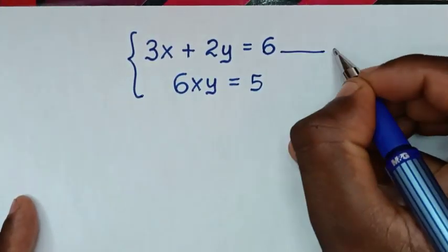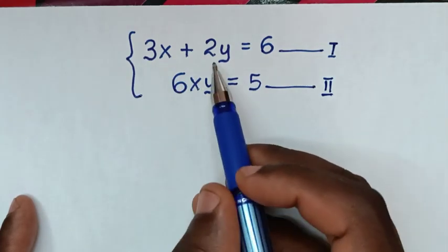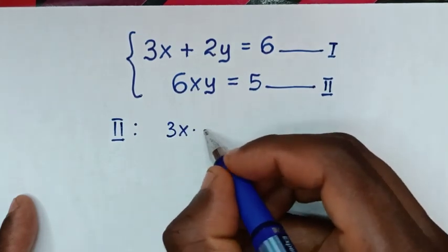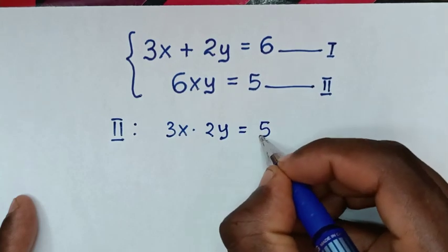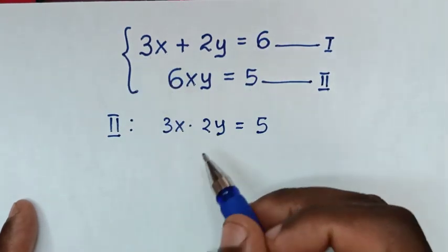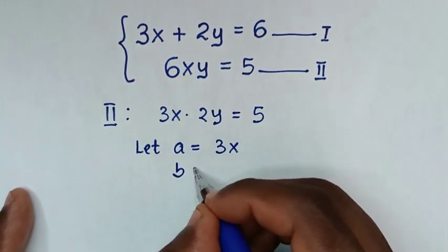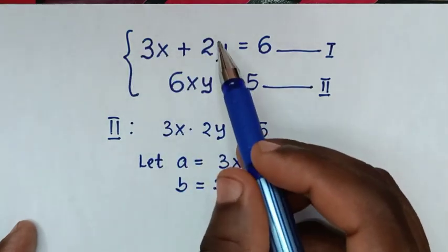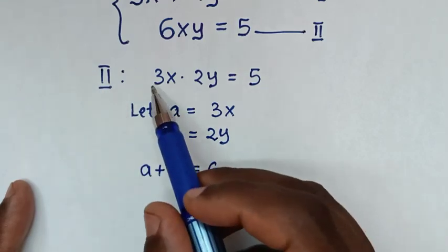Let's call this equation 1 and this equation 2. From equation 1 we have 3x and 2y. From equation 2, 6xy is the same as 3x times 2y, because 3 times 2 is 6 and x times y is xy, so it equals 5. Since 3x and 2y are common in both equations, we let a equal to 3x and b equal to 2y. Then equation 1 becomes a plus b equals 6, and equation 2 becomes a times b equals 5.